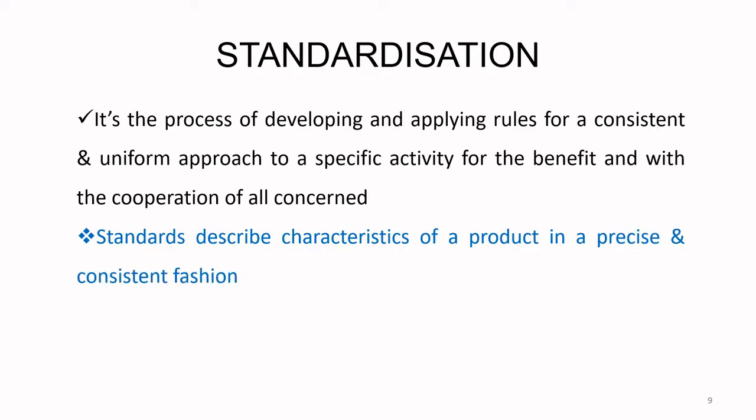Standards describe characteristics of a product in a precise and consistent fashion. For example: 100% cotton, 40s poplin, 40s both in warp and weft, 100 GSM, 42-inch width, with certain physical and chemical properties — that is a standard because it describes characteristics precisely and consistently.